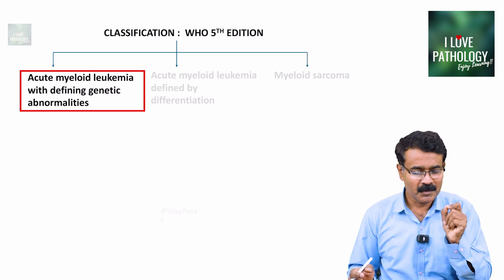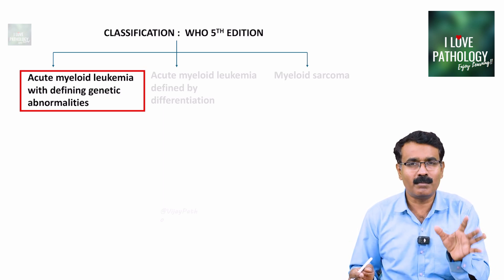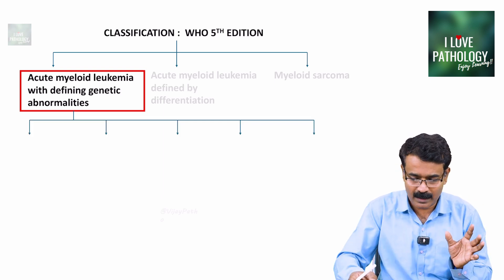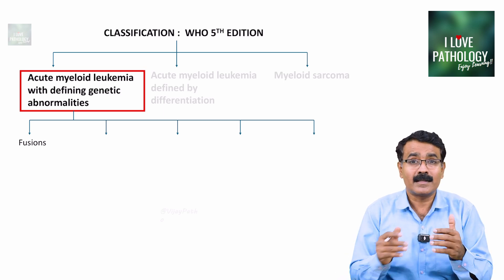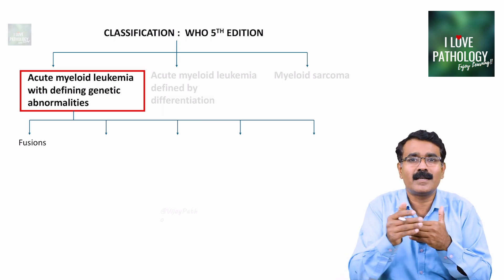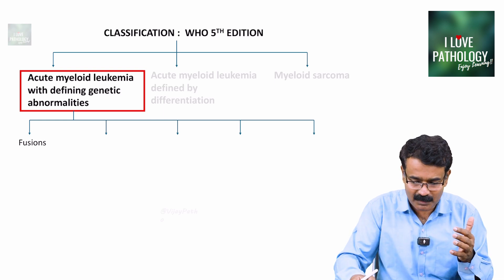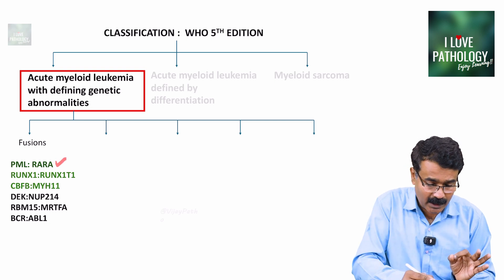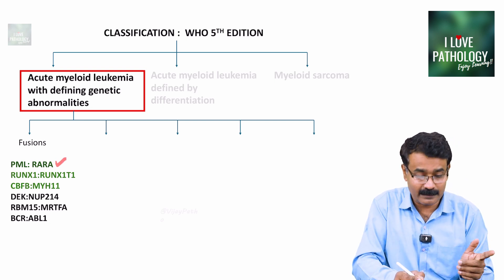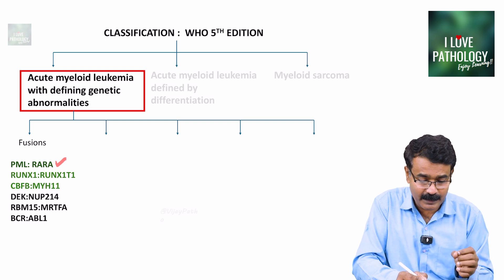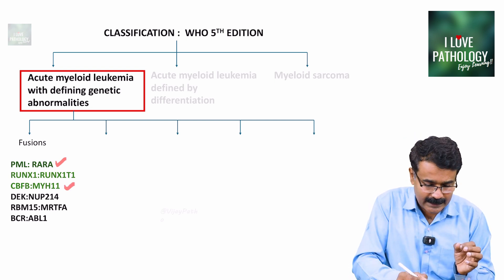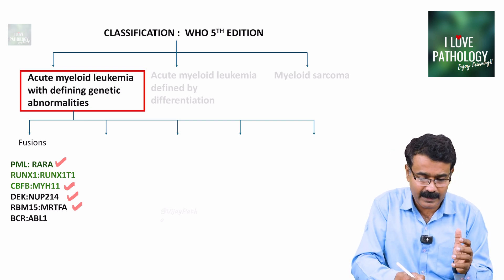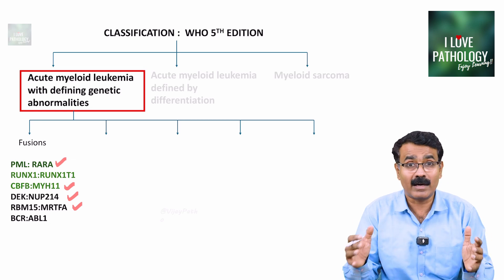Acute myeloid leukemia with defining genetic abnormalities — what are the important genetic abnormalities? First, it can be fusions. Examples of genetic fusions include PML-RARA fusion, RUNX1-RUNX1T1, CBFB-MYH11, DEK-NUP214, RBM15-MRTFA, and BCR-ABL1 mutation — just like what you saw in chronic myeloid leukemia, it can also be seen in AML. The ones marked in green have a very good prognosis. At least remember PML-RARA and RUNX1-RUNX1T1 mutations.